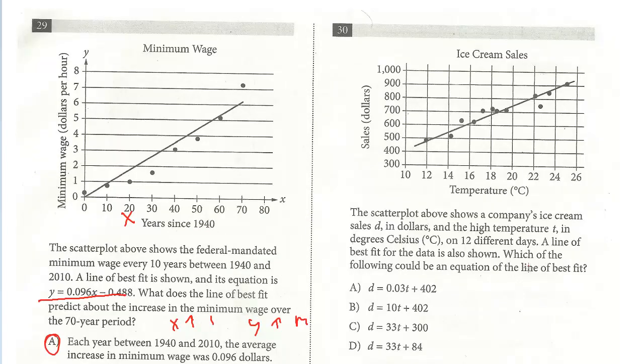And then question 30, we have another scatter plot here. The scatter plot above shows the company's ice cream sales, D in dollars, and the high temperature, T in degrees Celsius on 12 different days. A line of best fit for the data is also shown. Which of the following could be the equation of the line of best fit? We just have to find the equation of the line. And just to review, don't use the observations because we're looking for the equation of the actual line. So look for points on the line. We want to pick points that are on the line.